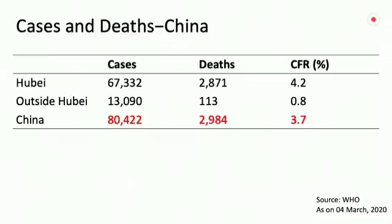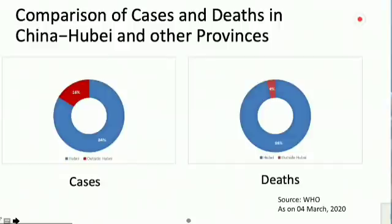Looking at cases and deaths in China: during the peak of the outbreak, China reported about 80,000 cases and nearly 3,000 deaths. The overall case fatality rate in China was 3.7%. It was Hubei province which bore the major brunt of the epidemic, with a case fatality rate as high as 4%, while in the rest of the Chinese provinces the case fatality rate was less than 1%. 84% of cases were in Hubei province, versus 16% outside Hubei. The figures for deaths are even more stark — 96% of deaths were in Hubei province, as opposed to just 4% outside. Hubei province was truly the epicenter of this outbreak.